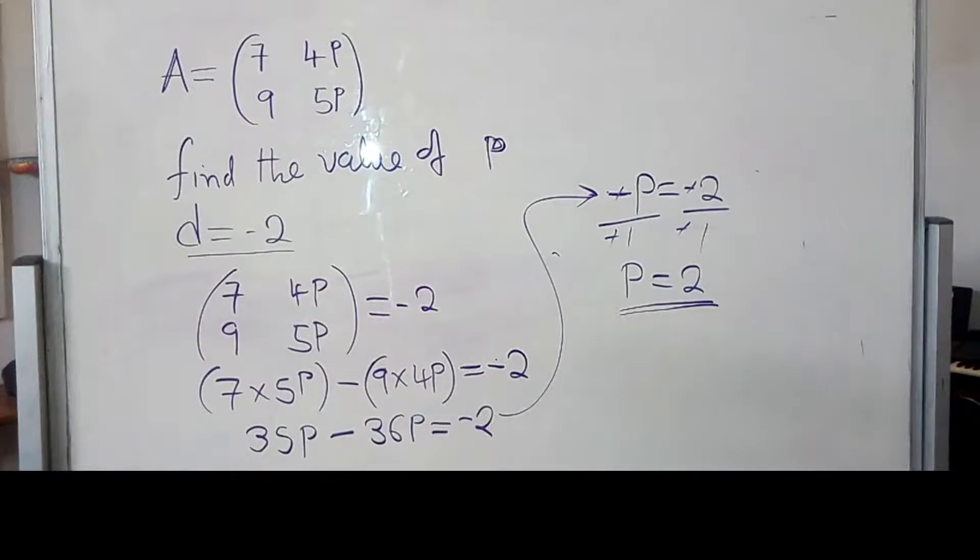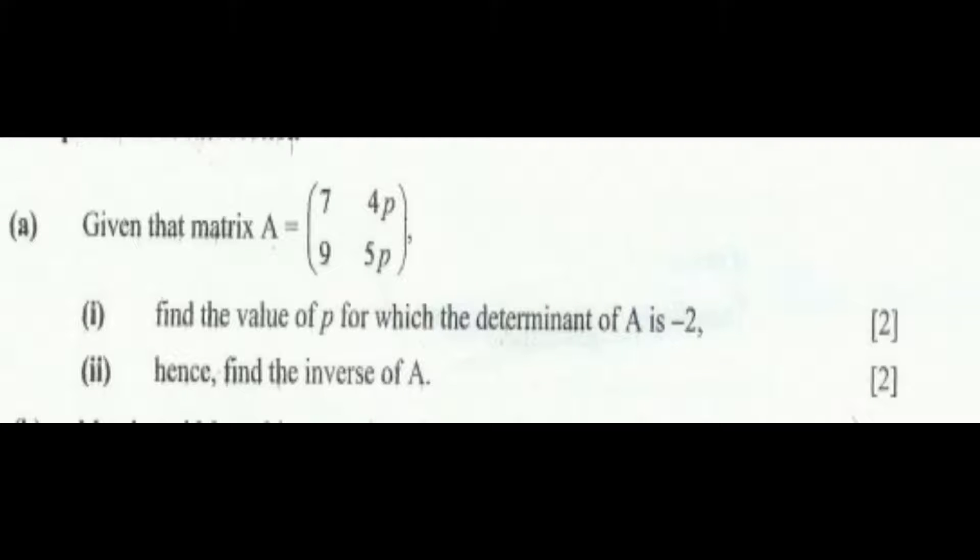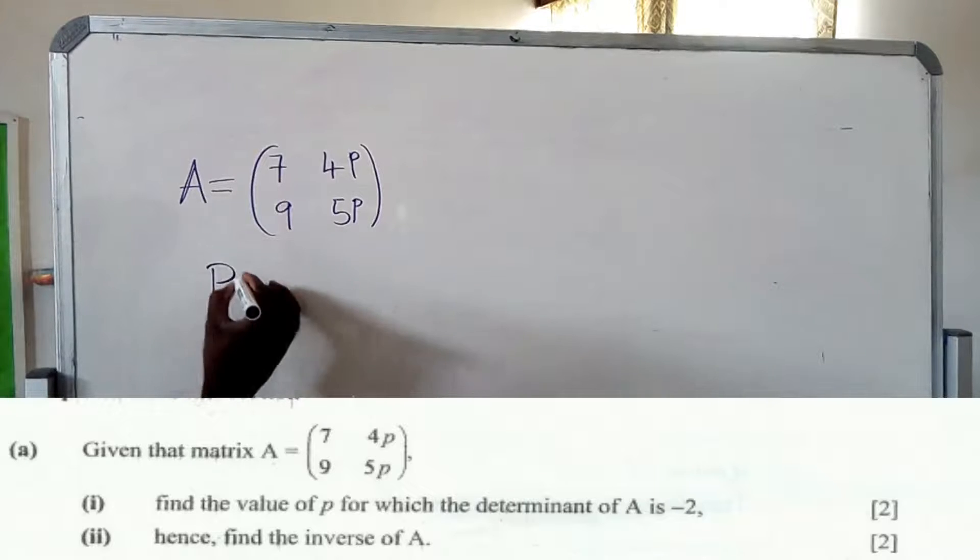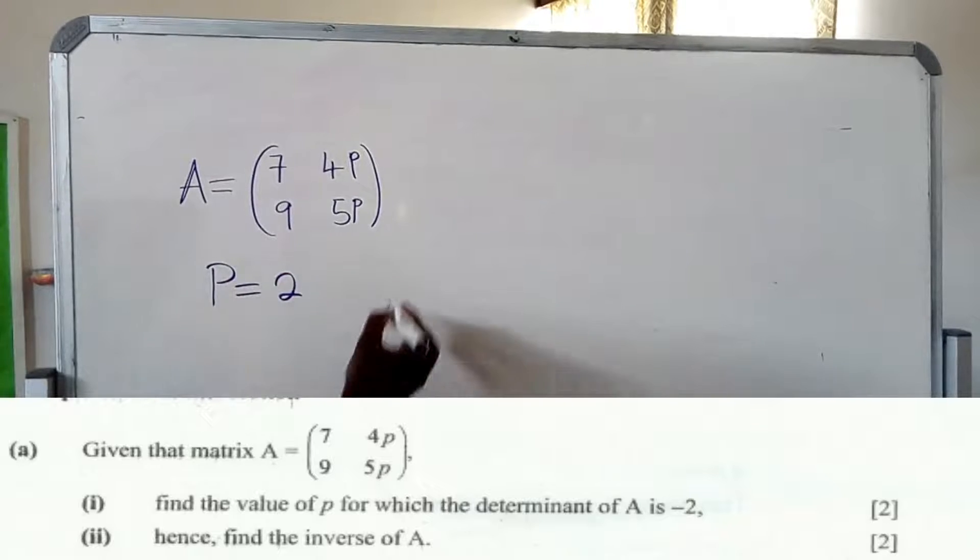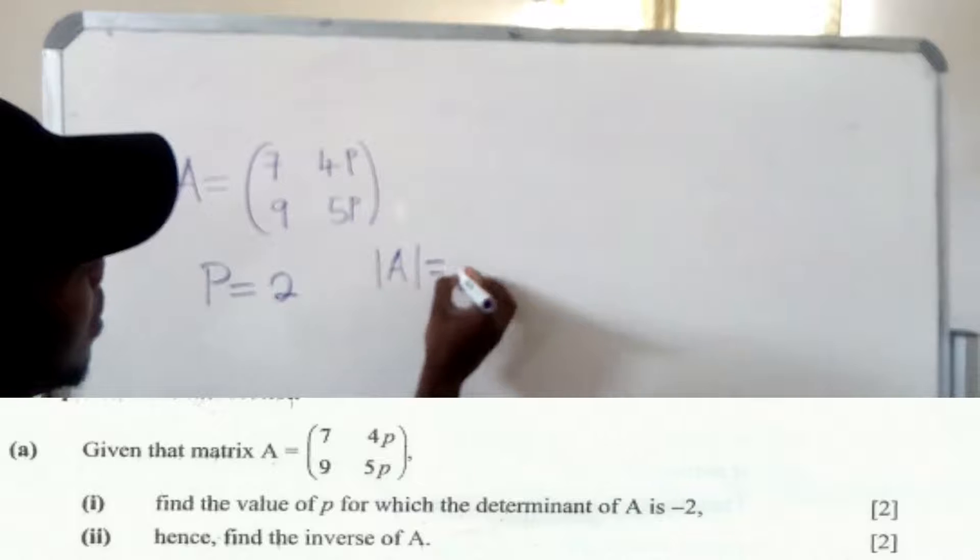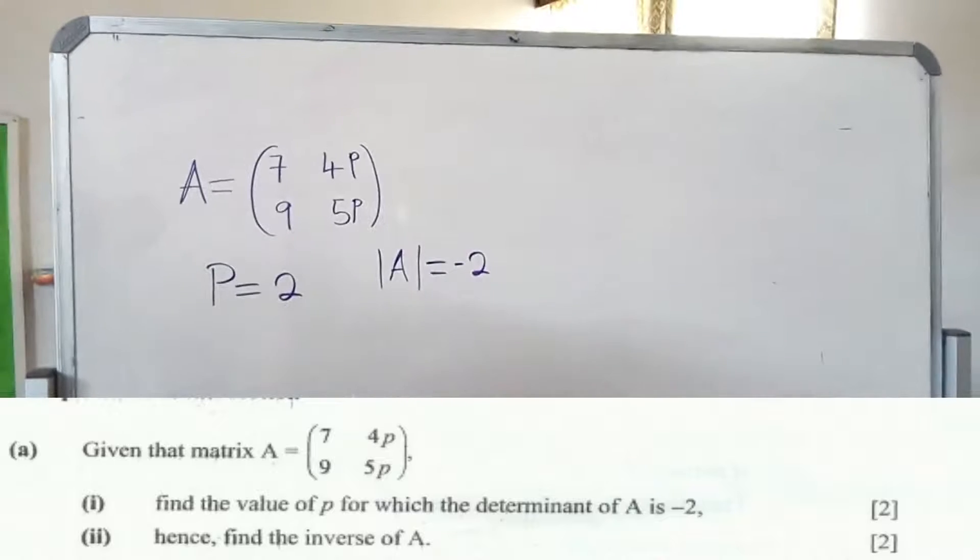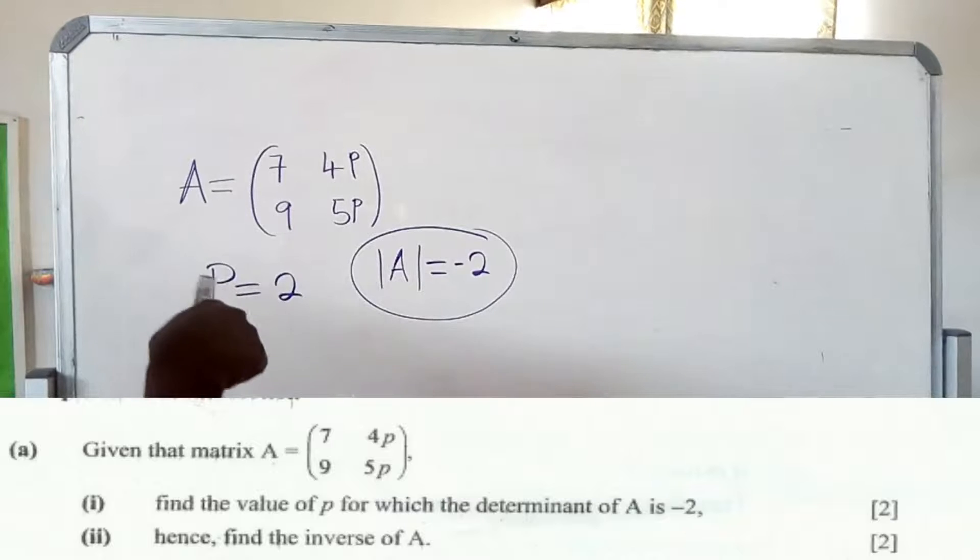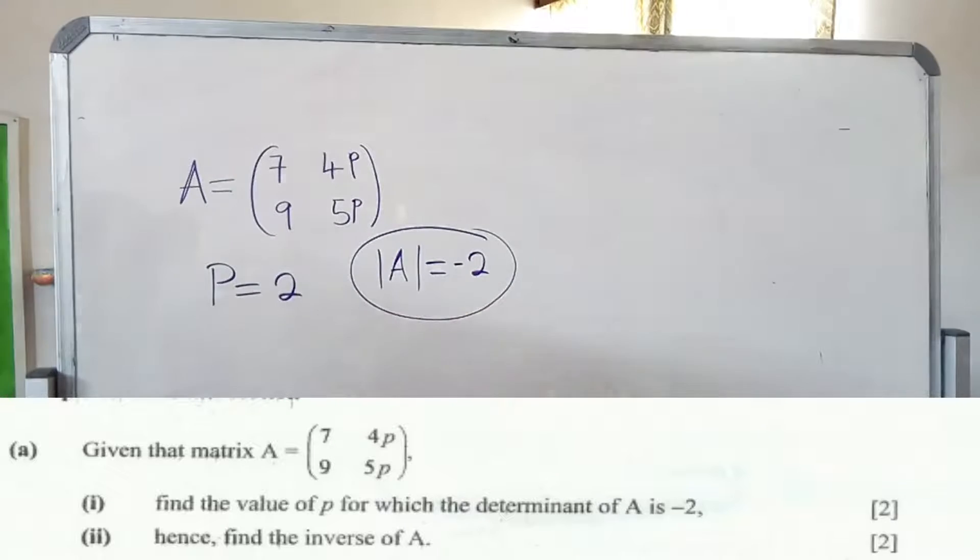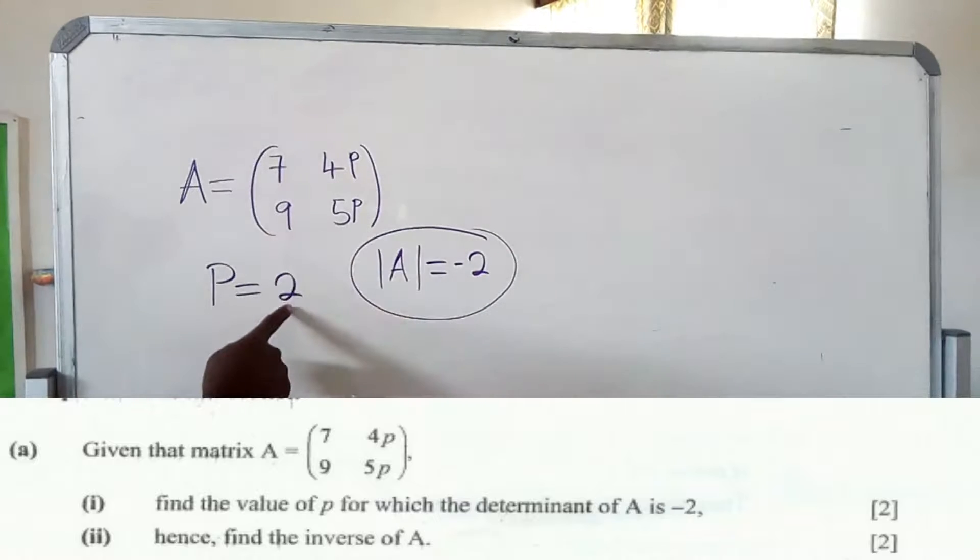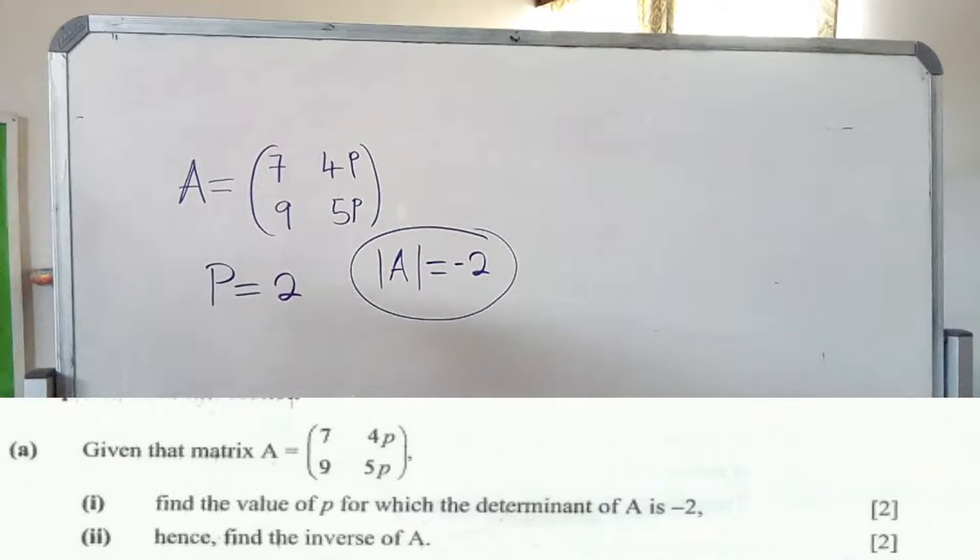Thank you. We go to the next question. Okay, since we have found the value of P, the value of P which I have found is 2. And the determinant of this matrix is negative 2. So, this has just been given in the question. They have said the determinant of this matrix is negative 2, while the value of P we have just found is 2. So, now we continue.